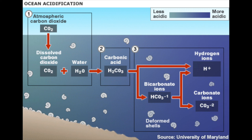When carbon dioxide is absorbed, a series of chemical reactions occur. These reactions result in more hydrogen ions being released into the water. The increase in hydrogen ion concentration causes the water to become more acidic, so the pH decreases.